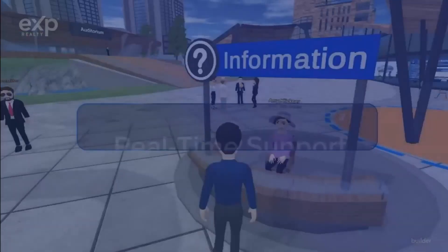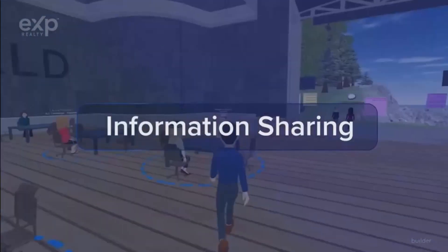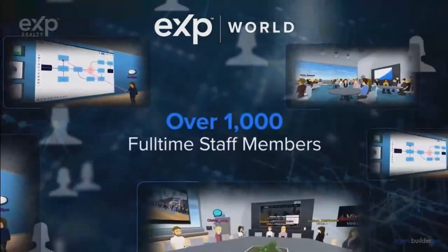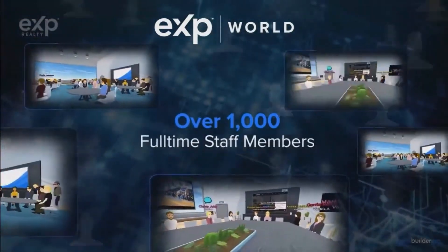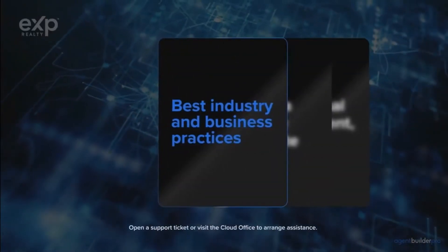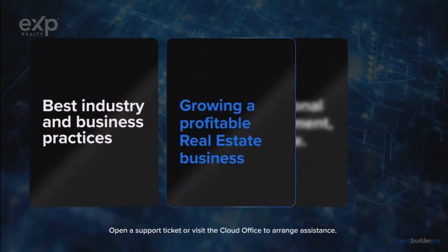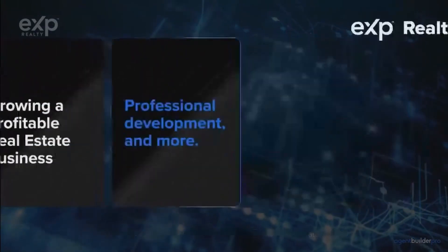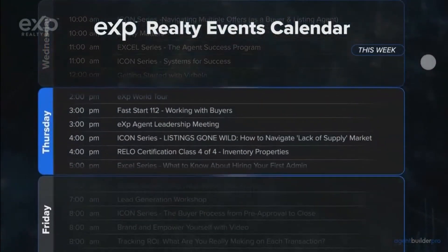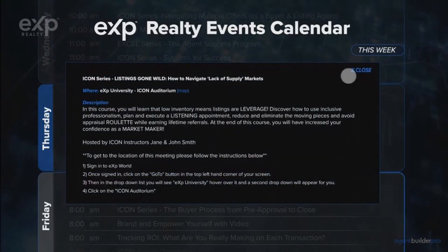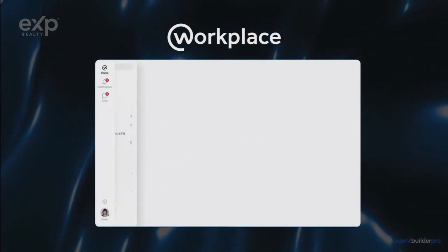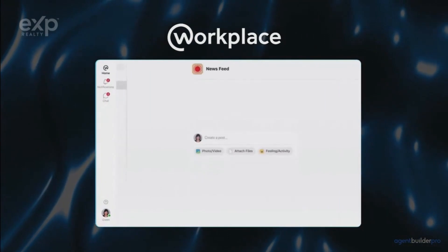Join a meeting or training within a community via your phone, tablet, or computer. In eXp World, agents get real-time live support from over 1,000 full-time staff members and access to over 80 hours of live training weekly. Training focuses on industry best practices, how to grow a profitable real estate business, professional development, and more. Sessions are taught by our highly experienced training department professionals as well as top producing agents and teams from around the world.